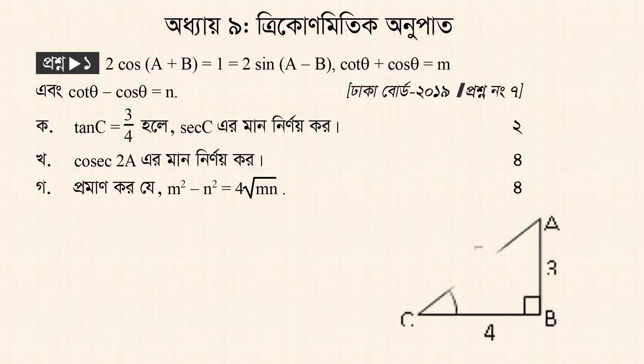tan c equals 3 by 4, and tan theta equals lambda by 1. So 3 is lambda, and 4 is lambda.